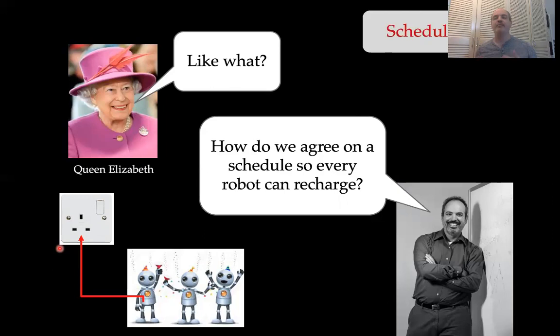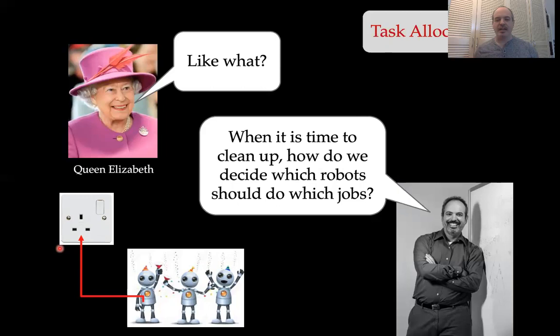This is a classic resource allocation problem. Or maybe we want to decide on a schedule — come up with an order so every robot gets a turn to recharge. This is a scheduling problem. Maybe there are time constraints: every robot only has a certain amount of time before it has to plug into the wall again. Or with our robot party, maybe when the party's over, we'd like the robots to help clean up and we have to decide which robots should do which jobs. This is a task allocation problem. These are all examples of coordination problems — problems where we have a set of devices that have to cooperate to accomplish something.